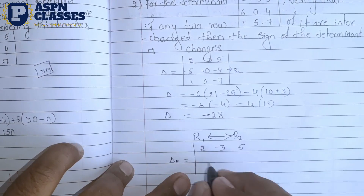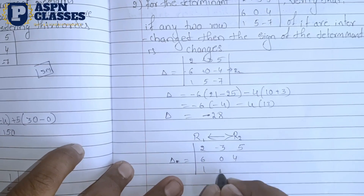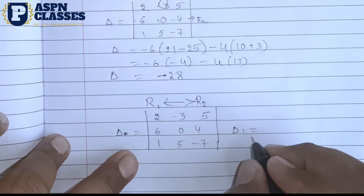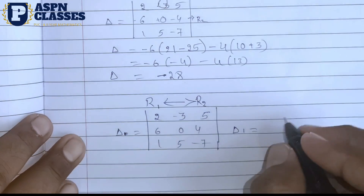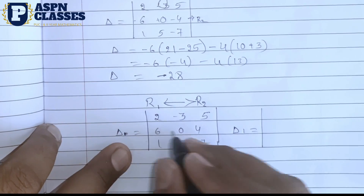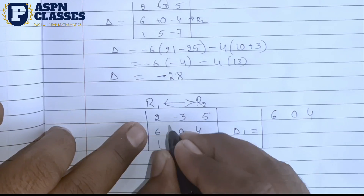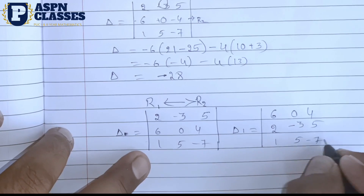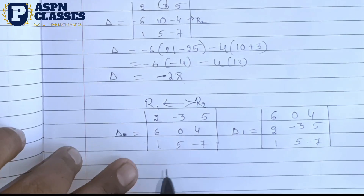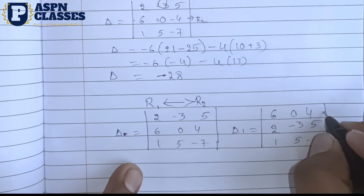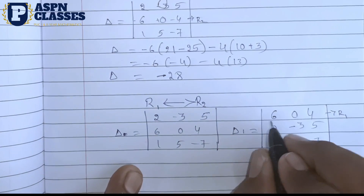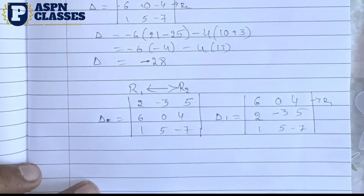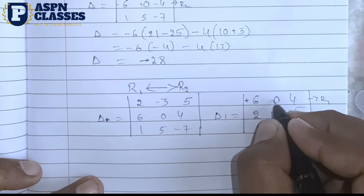So the question uses delta: 2, minus 3, 5 / 6, 0, 4 / 1, 5, minus 7. I will denote delta 1 and work on this. The expansion is along R1. The answer is plus 28. If it was minus 28, now it is plus 28 — the sign changes: plus, minus, plus.